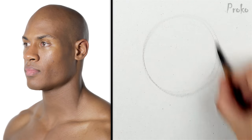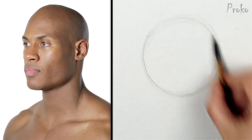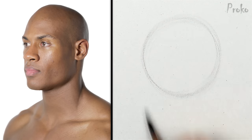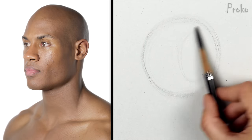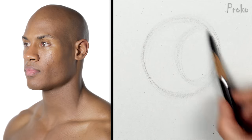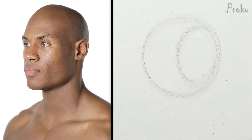So Loomis method, basically what we do is we have a cranial mass as a sphere, and then we attach a jaw to it with like a triangular boxy shape. That sphere cranium, we're gonna chop off the side, because the side of our head is kind of flat, right? So we gotta make sure we chop that off. That's a flat plane.